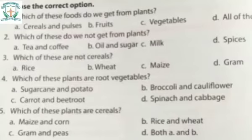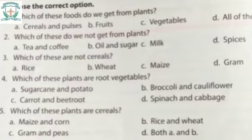Now let us do some textbook exercises. Turn to page number 40. Choose the correct option. Which of these foods do we get from plants? Cereals and pulses, fruits, vegetables, or all of these? The correct option is all of these.